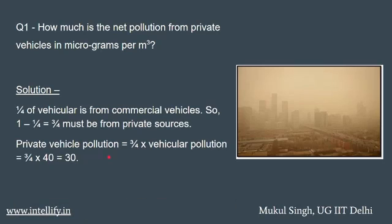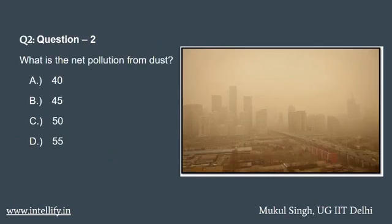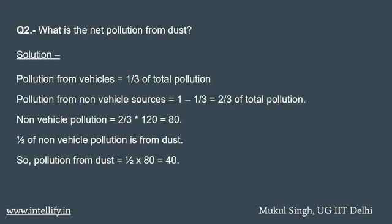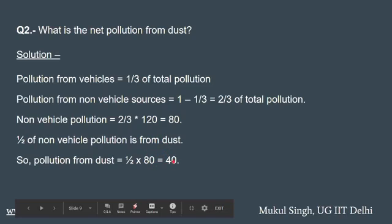यह first question था, काफी fairly direct। तो second question देखते हैं। Second question पूछ रहा है: what is the net pollution from dust? हमने देखा था कि vehicle से 1/3 है, तो जो remaining pollution है वो होगा 2/3. 2/3 of the total pollution, that is 80 — तो 80 जो है वो non-vehicular sources से है। उसने बोला था कि remaining का half is from dust, तो 80 का half 40 must come from dust. So 40 होगा contribution from dust.